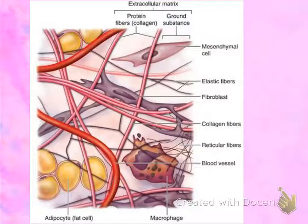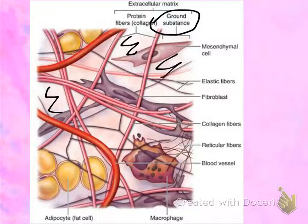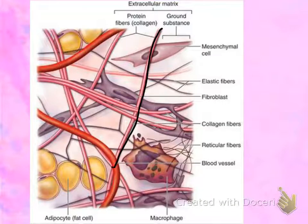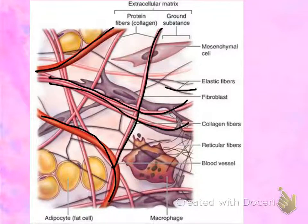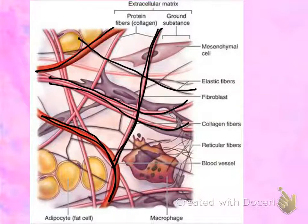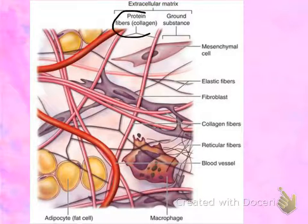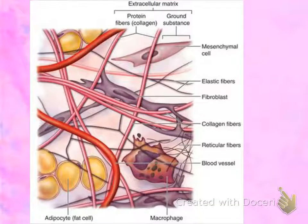Some of the structures you might run into in connective tissues are pictured in this diagram. The ground substance is all of that cream, pinkish, peach-colored material in the background. All of these string-like structures — the bands running through — are your fibers. Notice there are different thicknesses: some much thinner, some medium, and some much thicker. Together, the fiber and the ground substance make up the extracellular matrix. Some of the cells you might run into are fibroblasts, whose job is to make the fiber you see.